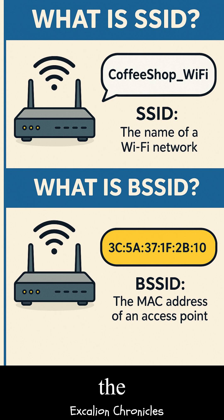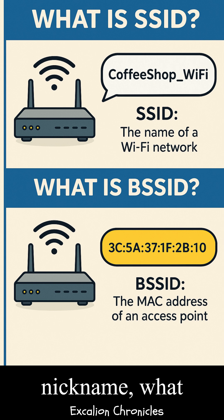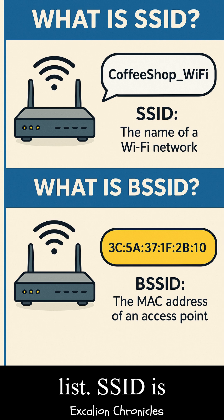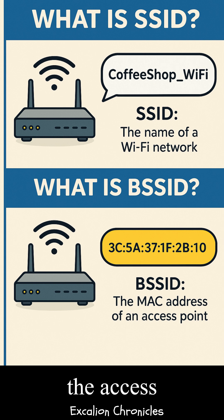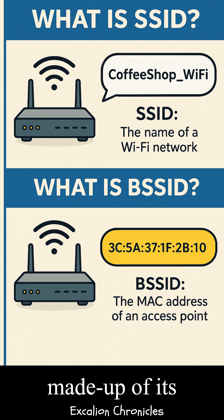Here's the difference: SSID is like the network's nickname — what you see and connect to in your Wi-Fi list. BSSID is the exact identity of the access point handling your connection, made up of its MAC address.